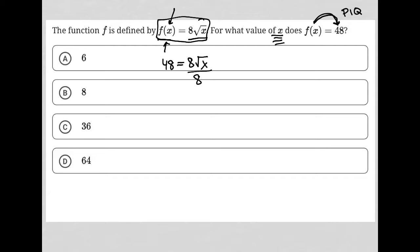So I can divide both sides here by 8 to start. My 8s will cancel on the right-hand side. 48 divided by 8 is 6.